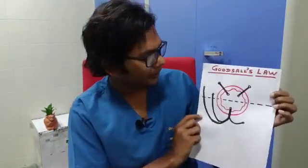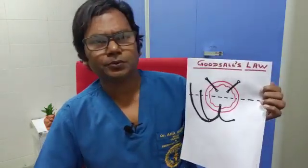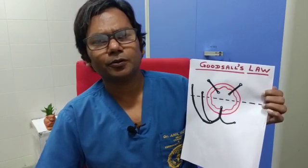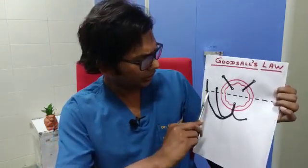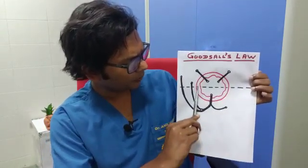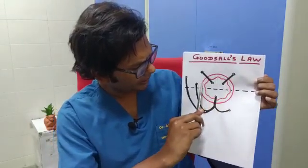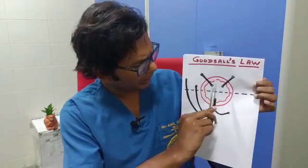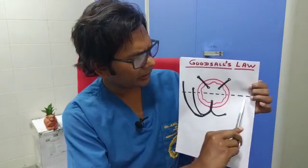By this diagram I would like to explain how the fistula's track is formed in the case of fistula in ano. When the patient comes to you, during perrectal examination with the patient in the left lateral or Sims position, imagine the circular circumference of the anal canal, then draw one imaginary horizontal line across it.